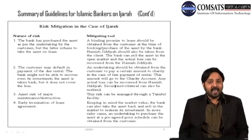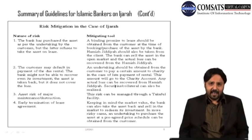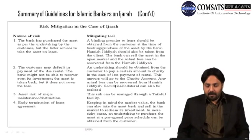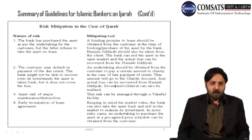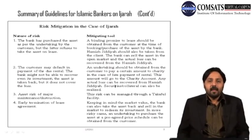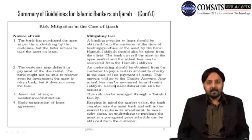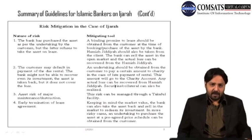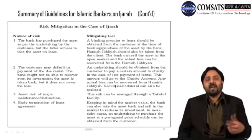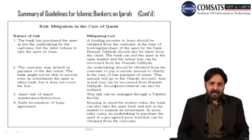To summarize the first risk: if a financial institution purchases an asset at the customer's request and the customer backs out, the solution is to obtain a binding promise at the time of requisition and also take earnest money as security. If the customer backs out, the bank sells the asset in the open market, and any price difference loss is recovered from the earnest money.